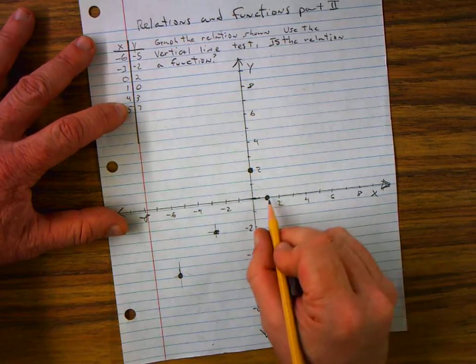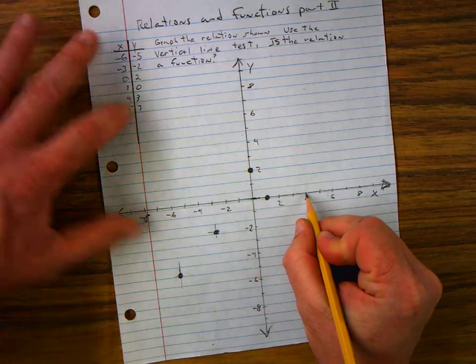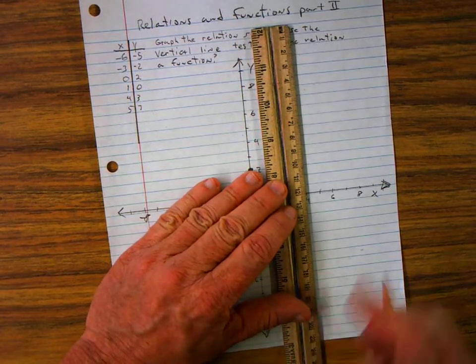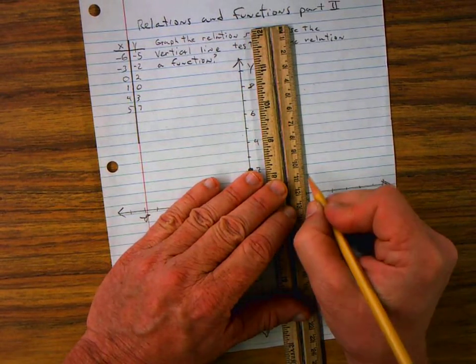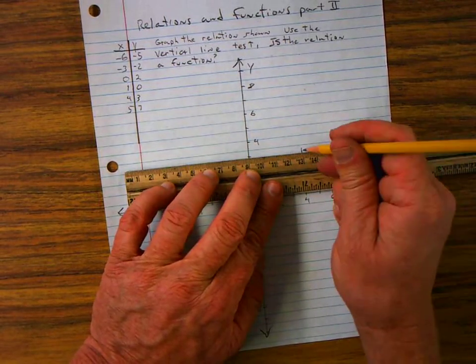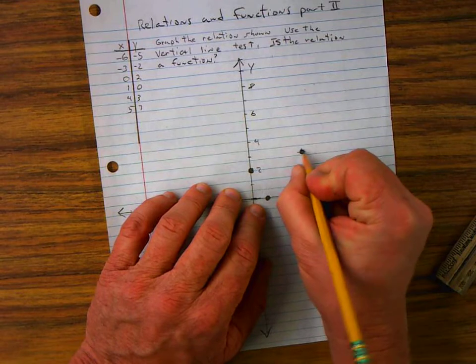The next one is X is 4. And then I got to go up 3. So I'll use my metric ruler. And go up 1, 2, 3. And that's my next ordered pair.